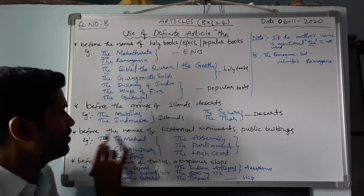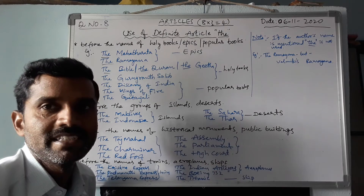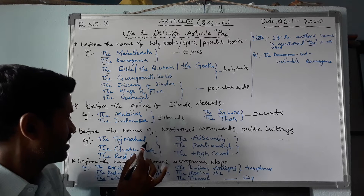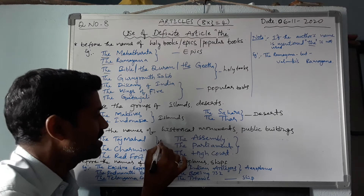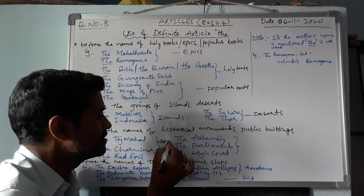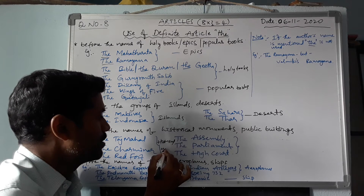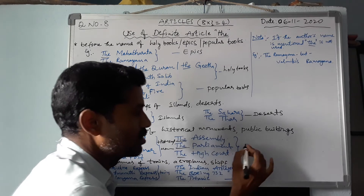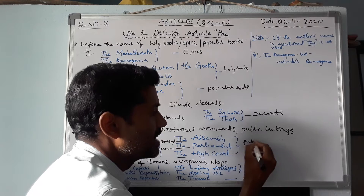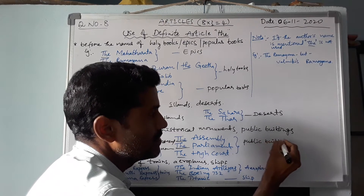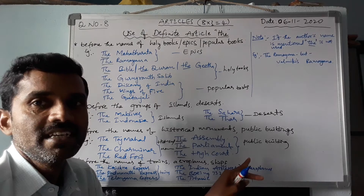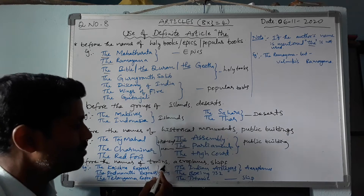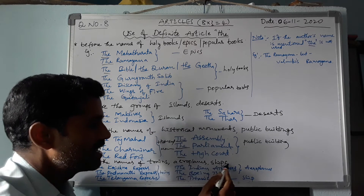Next, before the names of historical monuments and public buildings, we use 'the'. For example, the Taj Mahal, the Charminar, and the Red Fort are historical monuments. The Assembly, the Parliament, and the High Court are called public buildings. Before all these names we should use the definite article 'the'.